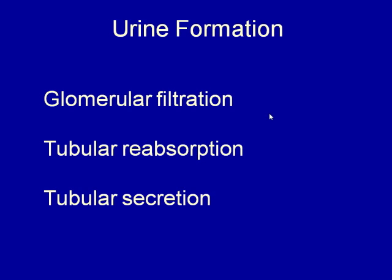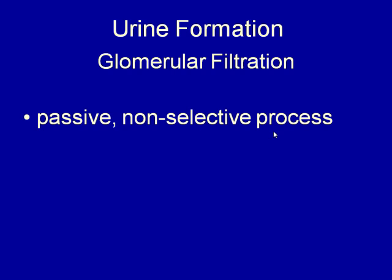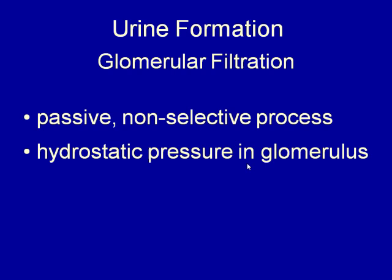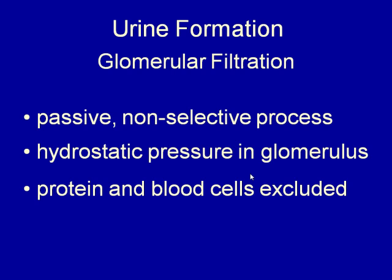In glomerular filtration, this is a passive, non-selective process — filtration is passive and non-selective. The driving force is the hydrostatic pressure in the glomerulus, which is driven by blood pressure. This is why blood pressure is so important to urine formation; if you have low blood pressure, you will not make much urine. This hydrostatic pressure forces fluid through a filtration membrane, and anything dissolved in the fluid that is small enough to pass through the pores will end up in the filtrate. About the only things that can't get through are proteins and blood cells — pretty much everything else in the plasma passes through.